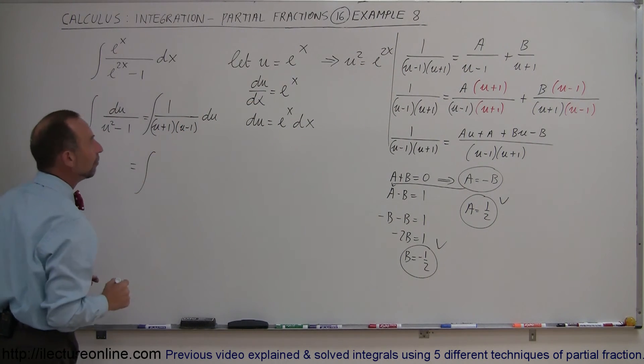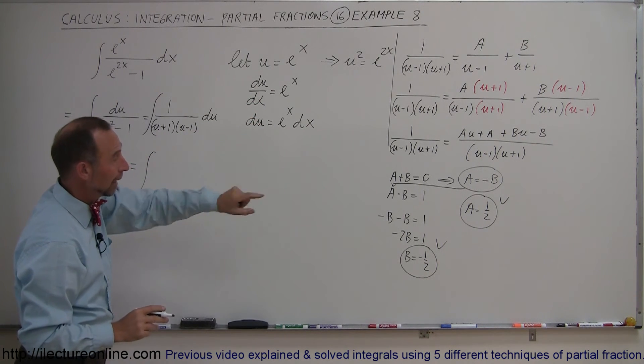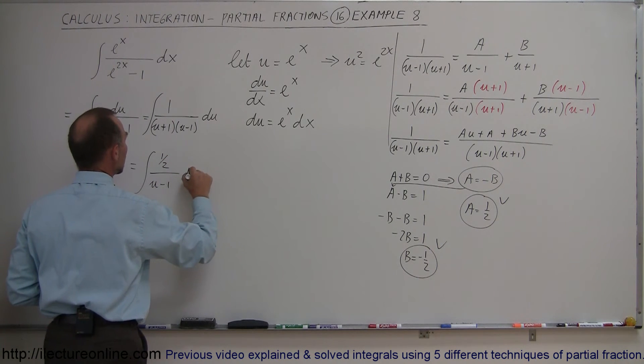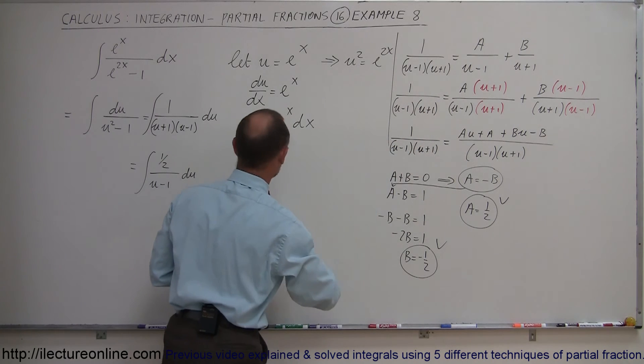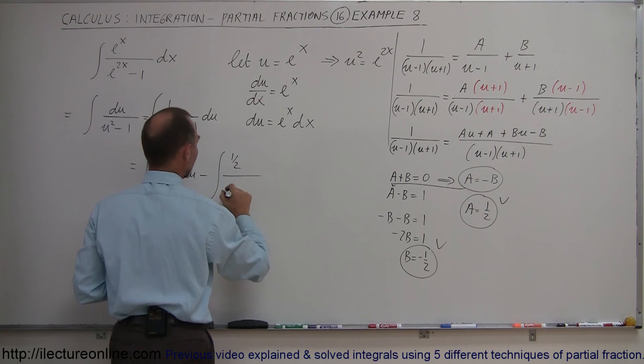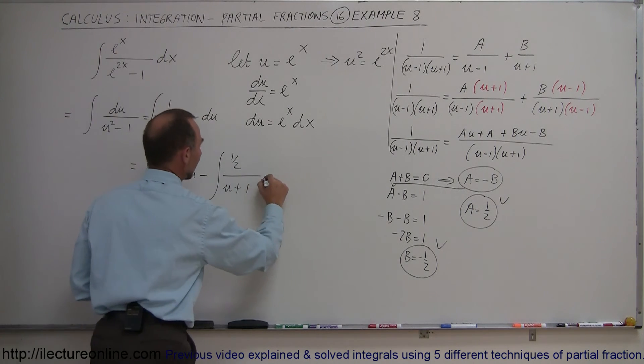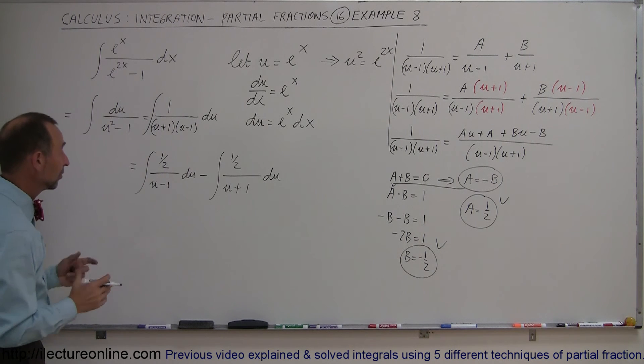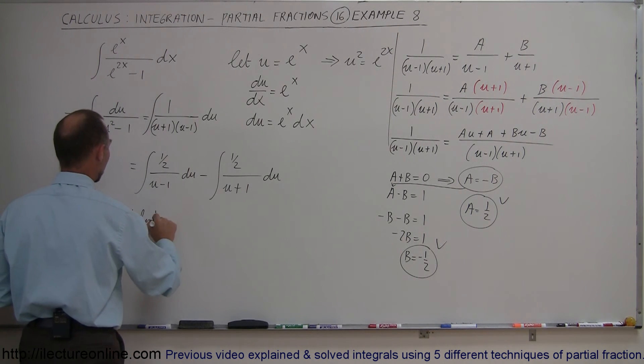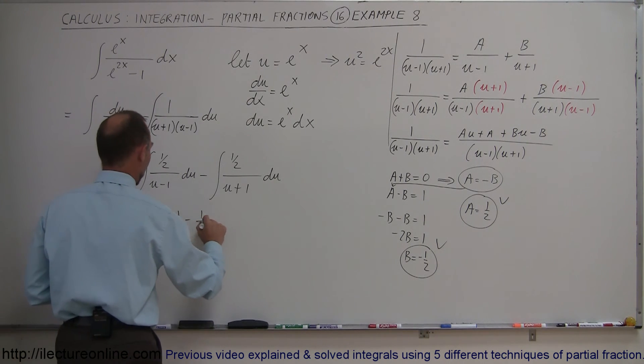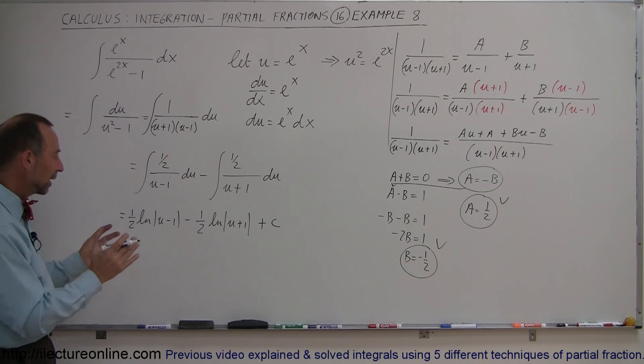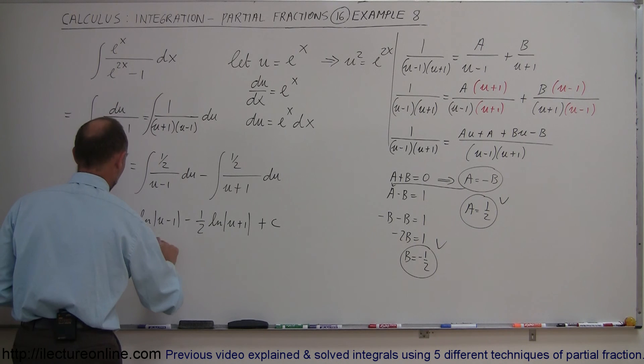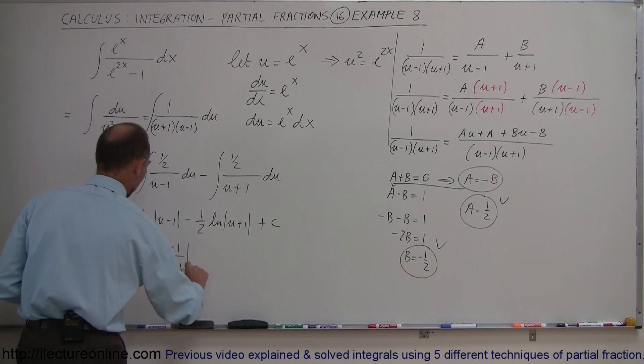Now I can integrate. The integral becomes (1/2)/(u-1) minus (1/2)/(u+1) du. This equals (1/2)ln(u-1) - (1/2)ln(u+1) + C. Factoring out 1/2 and combining the logarithms: (1/2)ln[(u-1)/(u+1)] + C.